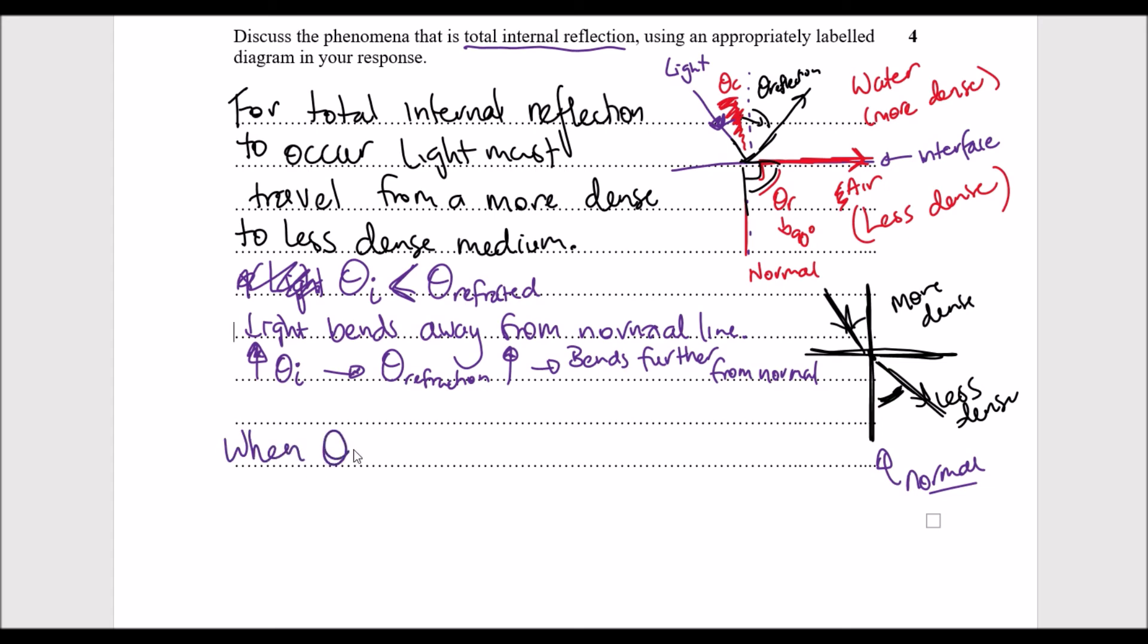When we reach a point where the refraction angle hits 90 degrees, so when theta r is 90 degrees, there's nowhere else for the light to go. We've reached the critical angle. That's theta c, that critical angle is also the incident angle we were talking about earlier before, so the light ray now can only bounce back into itself rather than refract into another medium.